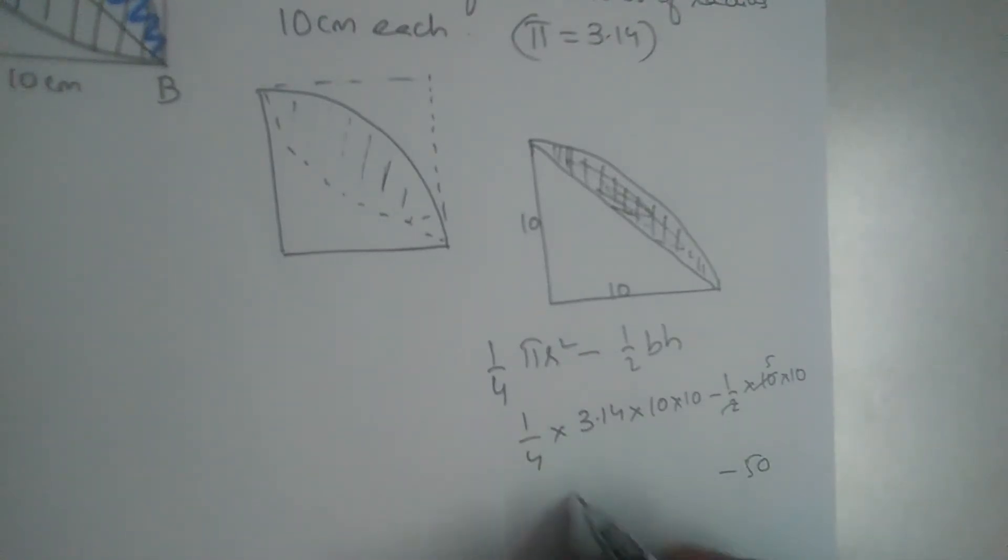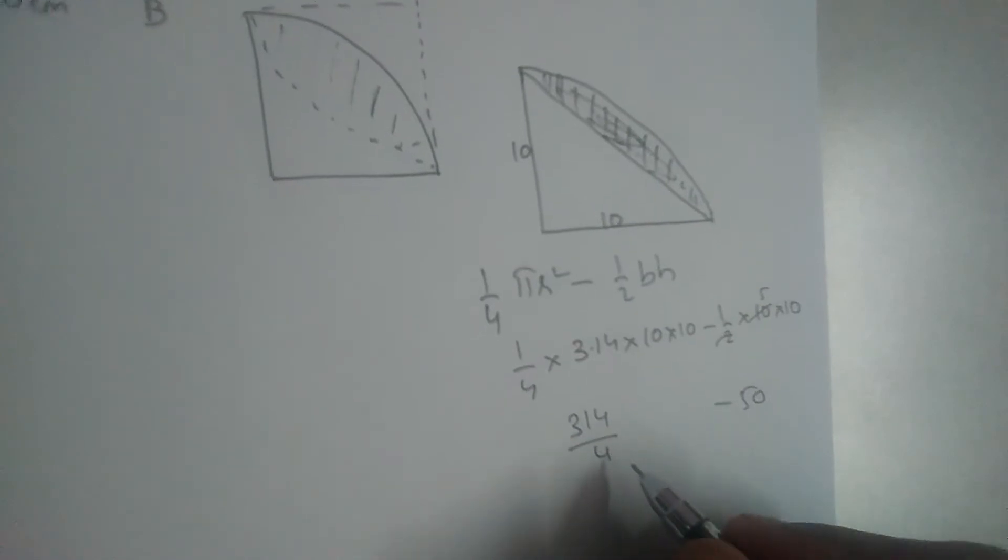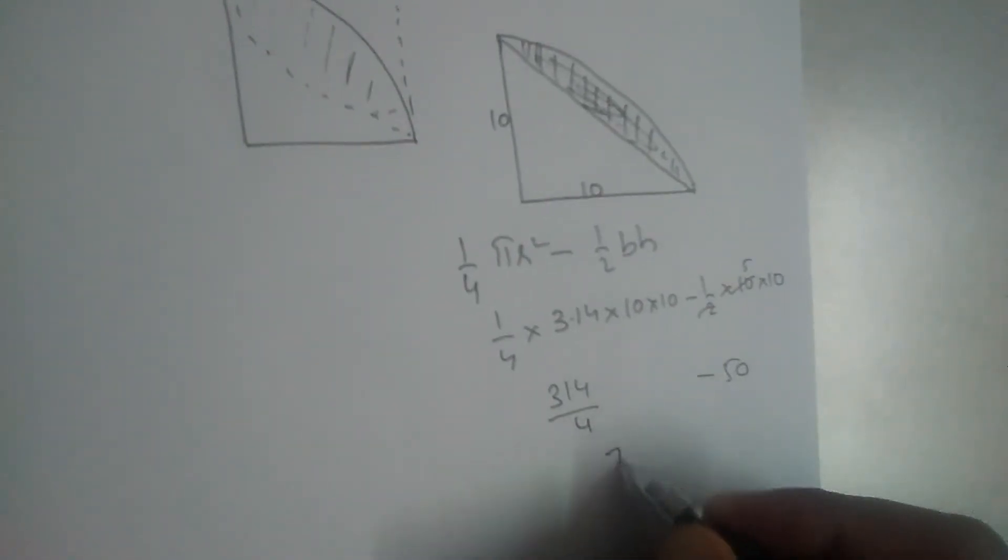Now here 314 divided by 4. 314 divided by 4 is 78.5 minus 50. This will give us 28.5.